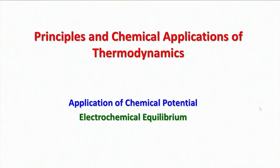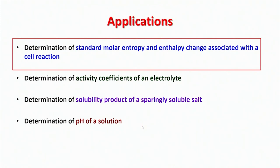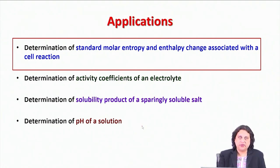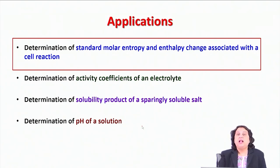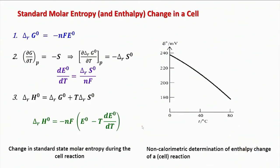Hello students. This is the final lecture of this particular course series where we are discussing electrochemical equilibrium and the applications of the concepts we have developed in this course so far. The first application we have already discussed is how to determine the standard molar entropy and enthalpy changes associated with the cell reaction. For this purpose, all you need to do is measure the E° value of the cell at different temperatures, and then you can find out ΔRs° and ΔRh° by knowing E° at a given temperature and the value of dE°/dT at the same temperature.